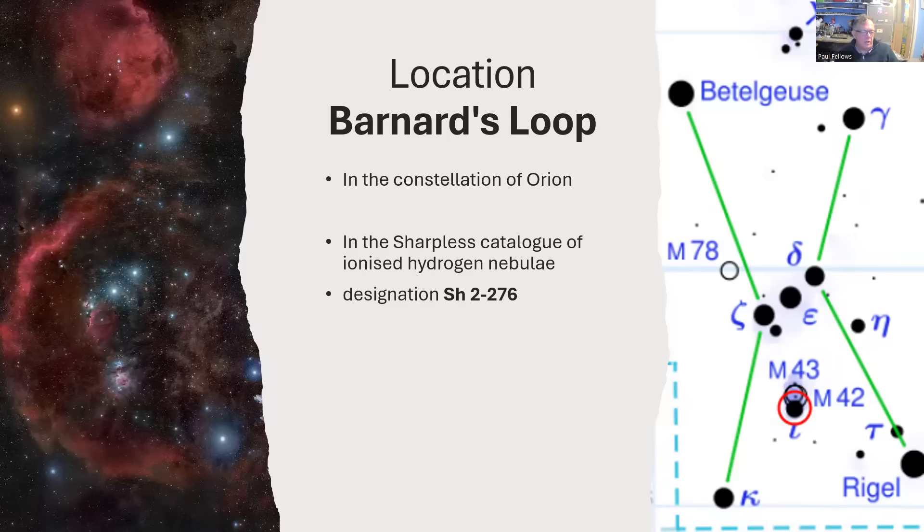But it's not the Orion Nebula we're talking about. We're talking about the photograph on the left and the enormous loop that goes from above Orion's belt all the way curving round to the left down towards the region between the two stars at the bottom of Orion there, Saiph and Rigel.